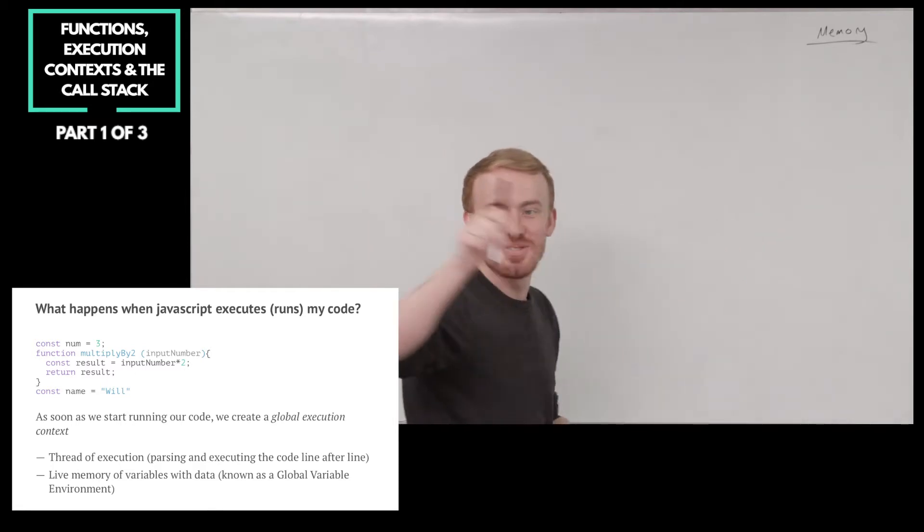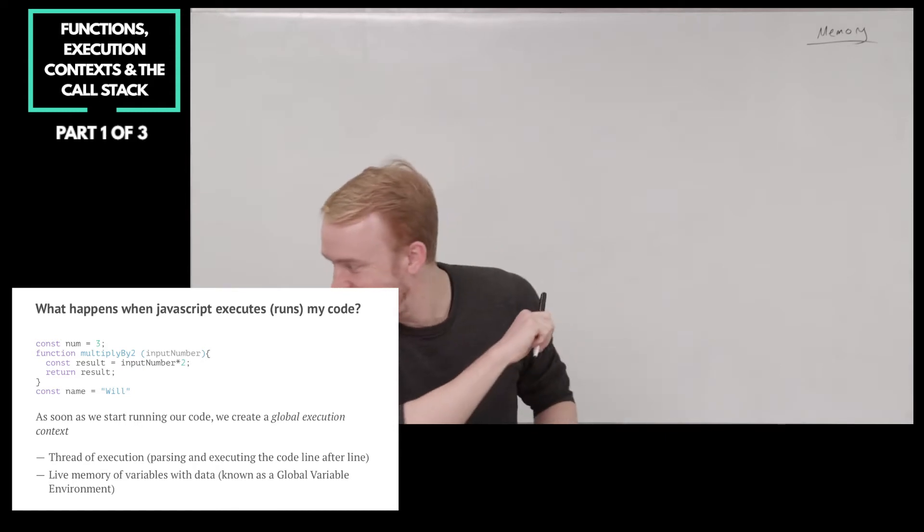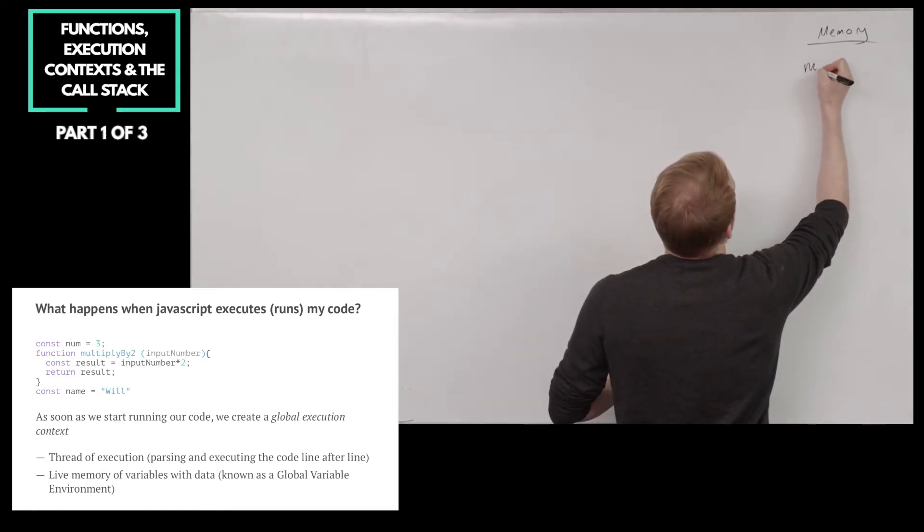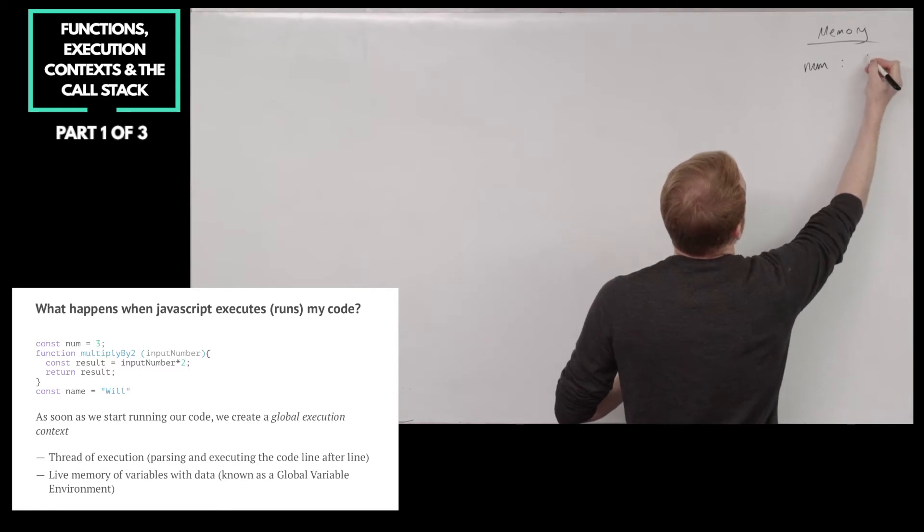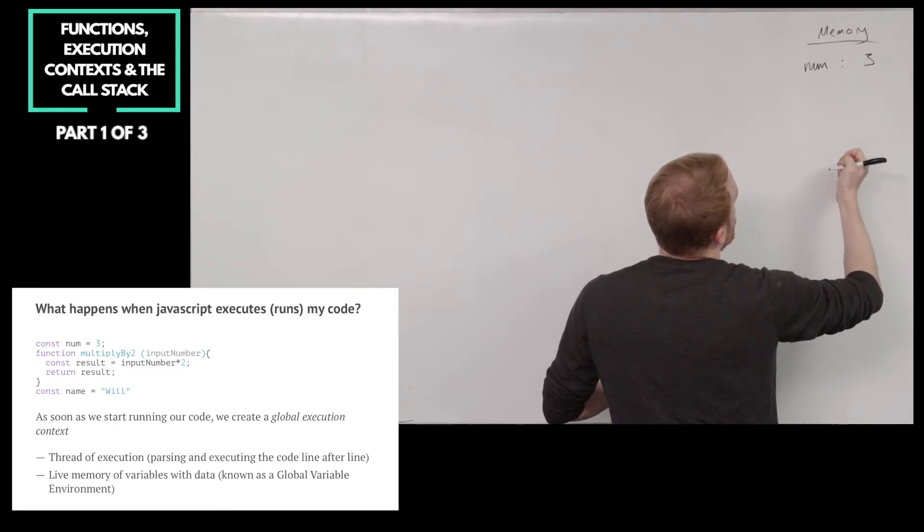What are we doing in our very first line of code, Lewis? So on the first line, we are declaring a constant variable called num, a constant called num and assigning it to the value of 3. Excellent.